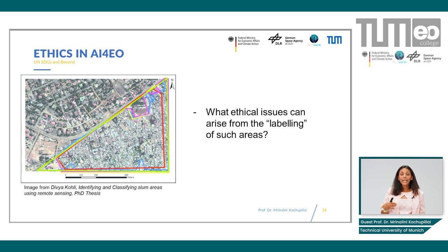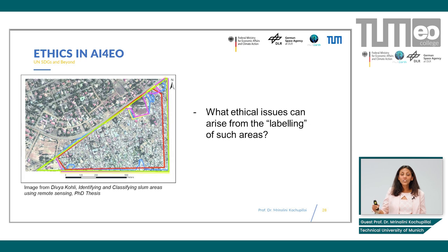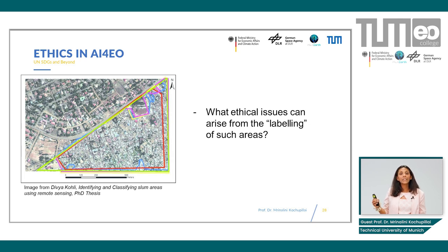Whatever we as academics do — whether fundamental or applied research — is what gets taken up by industry or government and used for policy making. So at the level of research, we already need to rethink the labeling of areas as slums. Now let's apply the ethical theories we learned in the previous segments to this ethical issue of slum identification using AI for Earth Observation.